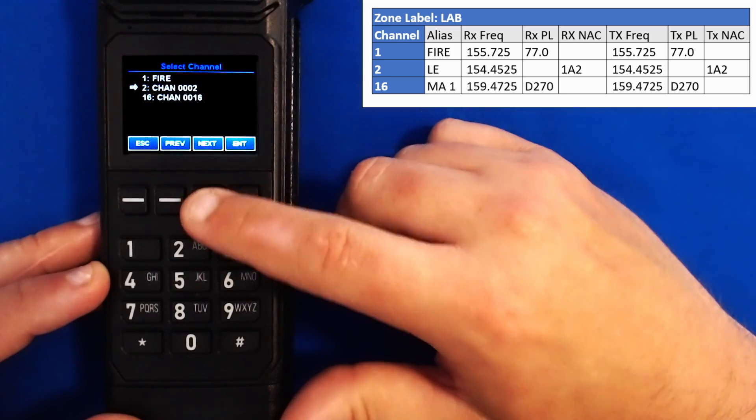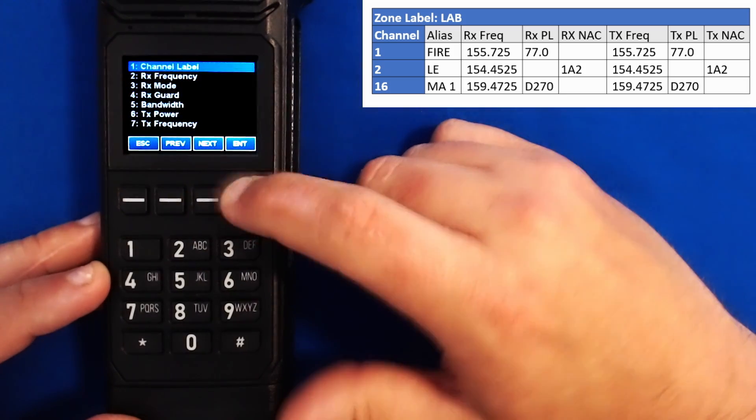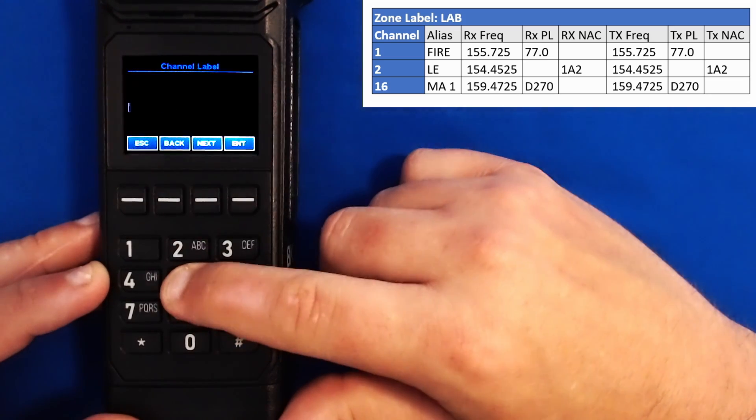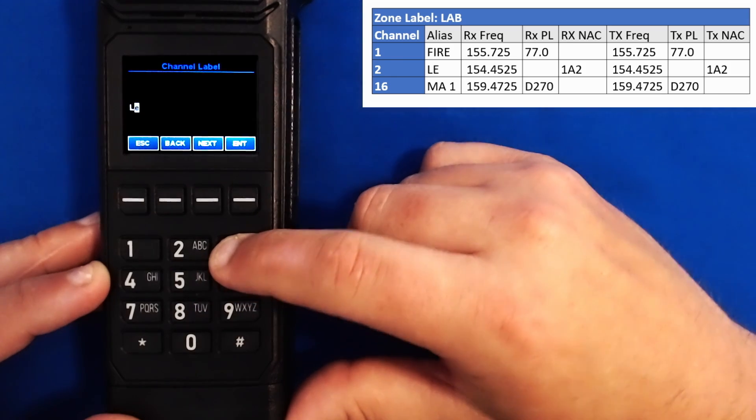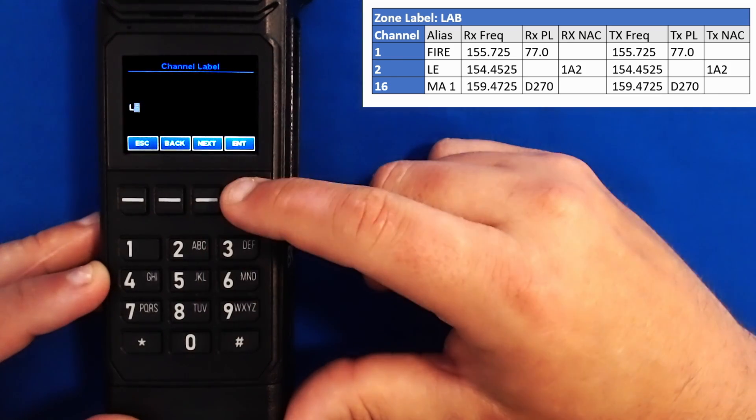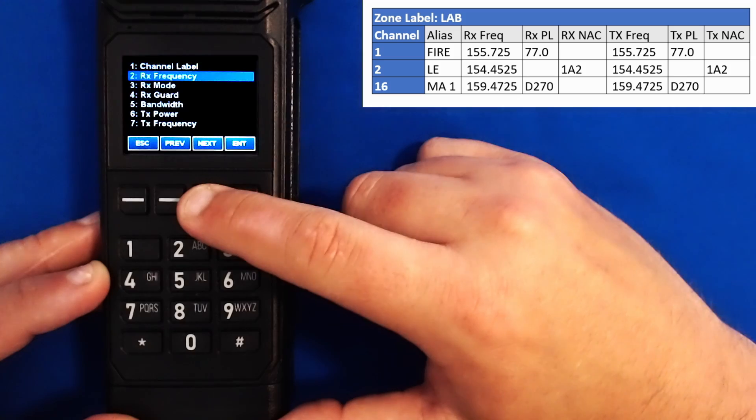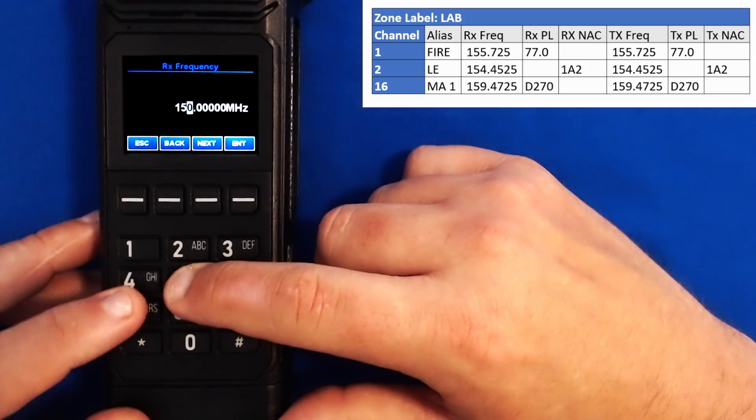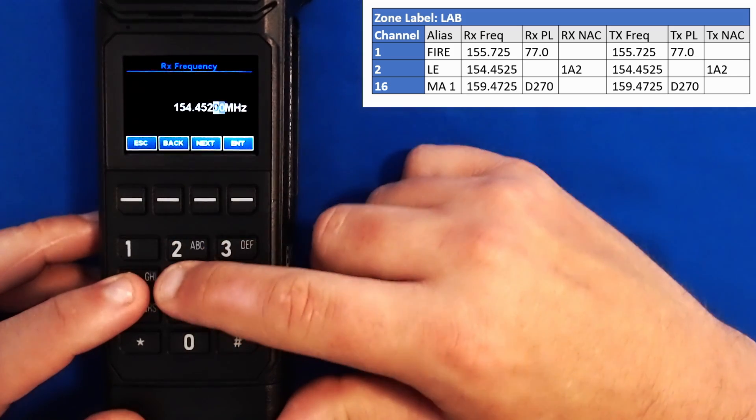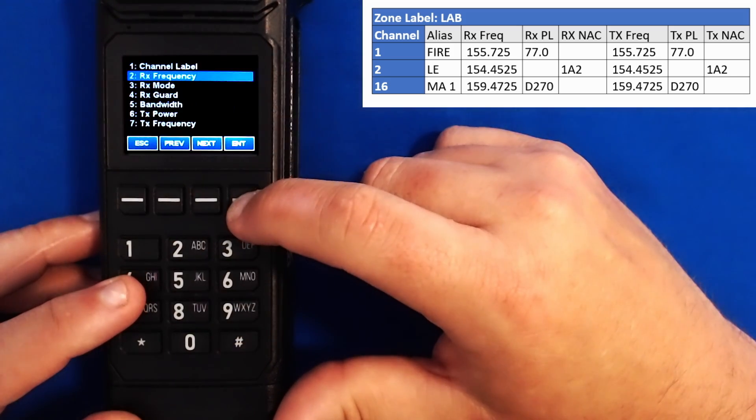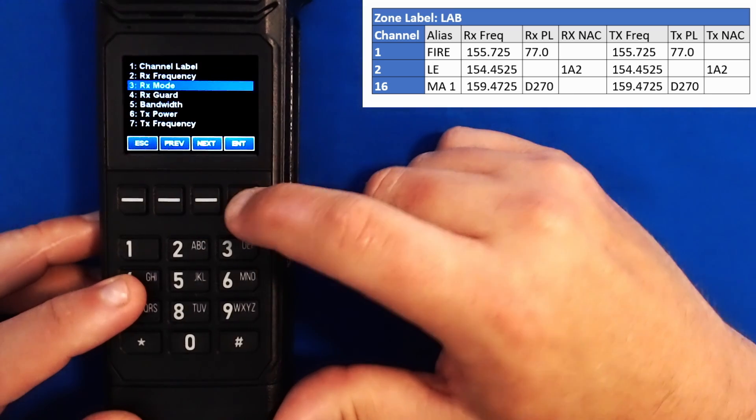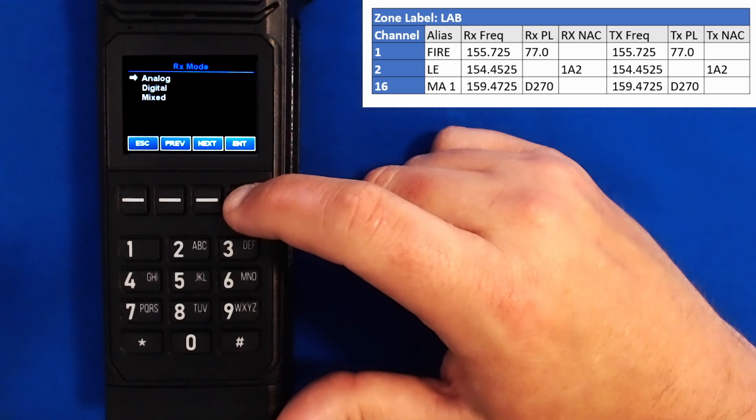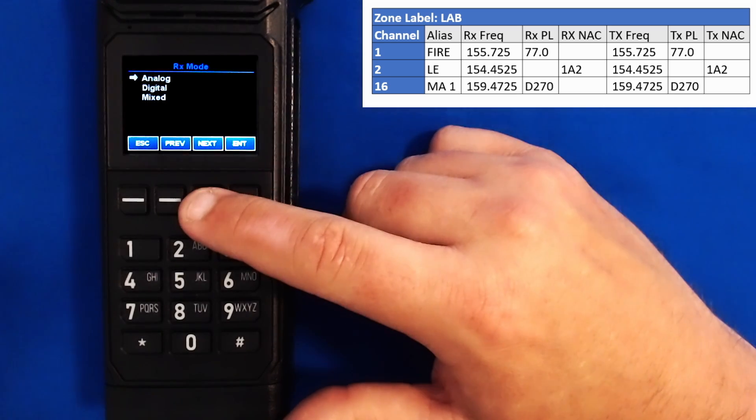Scroll down to channel 2 to edit it and press enter. We'll start with the channel label. We hit clear, we'll type in LE. Enter. We'll go to our receive frequency. Clear. 154425. Enter. We'll edit to our receive mode. We notice here I do not have a PL tone, but I do have a NAC code. The NAC is indicative of a digital channel, so we'll select digital.